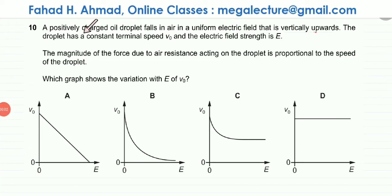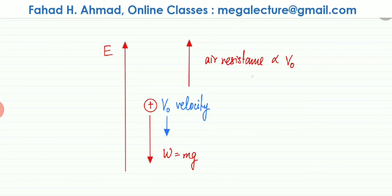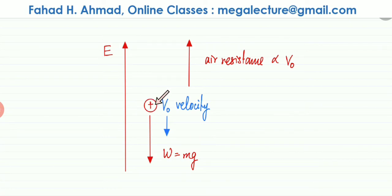The question states that a positively charged oil droplet falls in air in a uniform electric field that is vertically upwards. As shown in the diagram, this is the positively charged oil droplet falling down mainly because of its weight, equal to mg (mass times gravity), and the electric field is pointing in the upward direction.